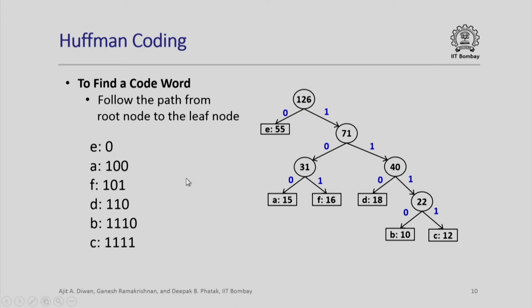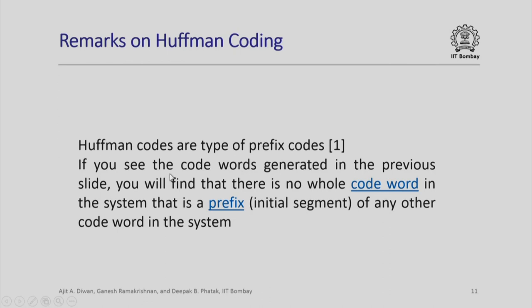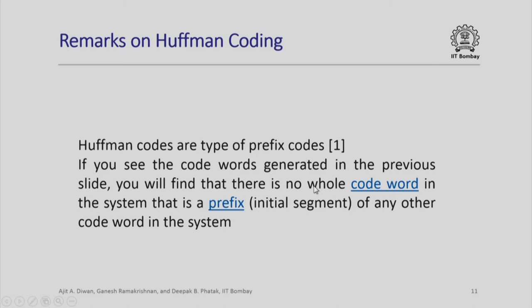This is a very peculiar property of these codes. Can you guess what that property is? Let us look at it. These are called Huffman codes. If you see the code words generated, no whole code word in the system is a prefix or initial segment of any other code word in the system. Let us go back to the previous slide to once again look at this peculiar property.